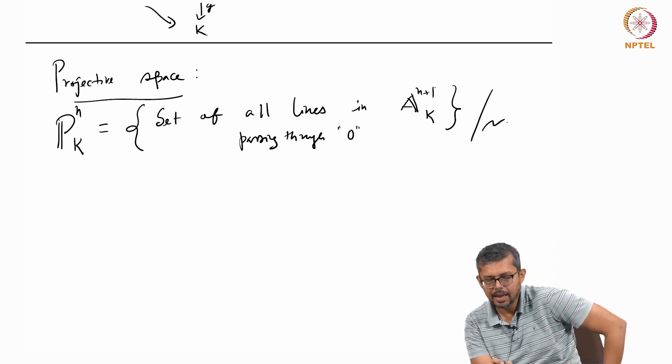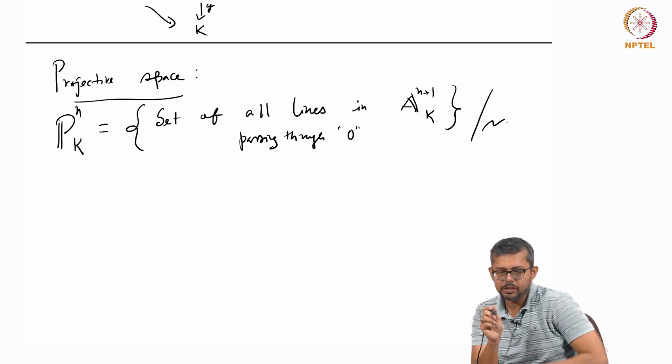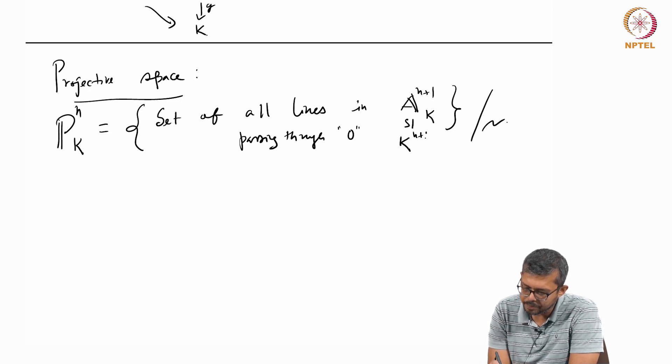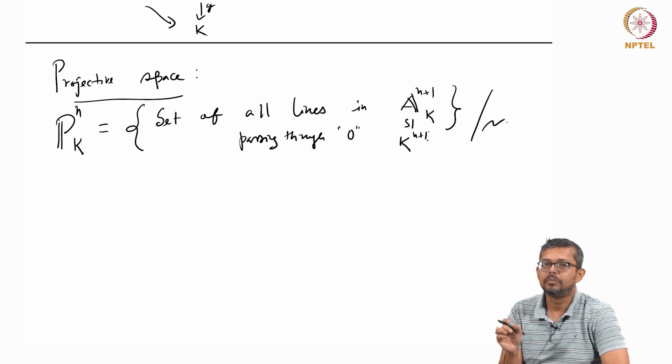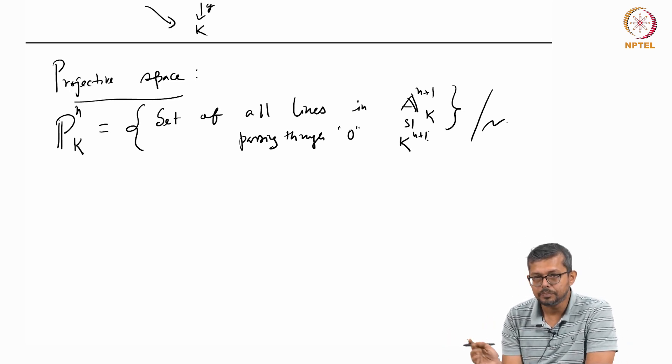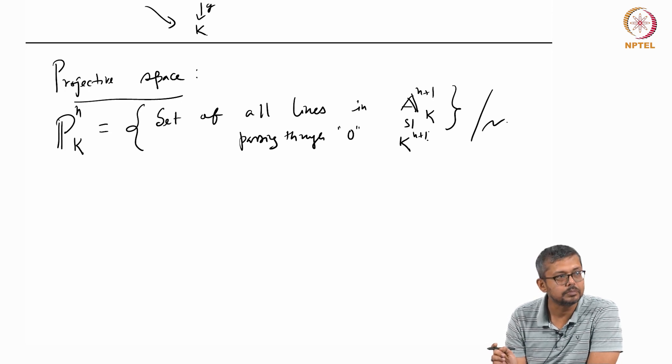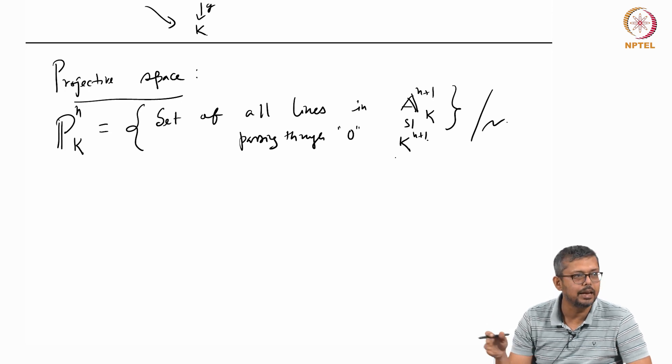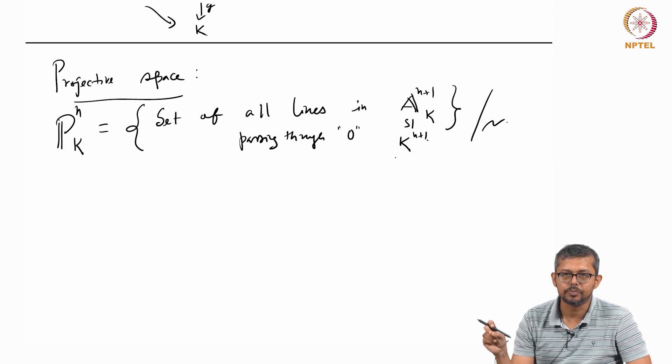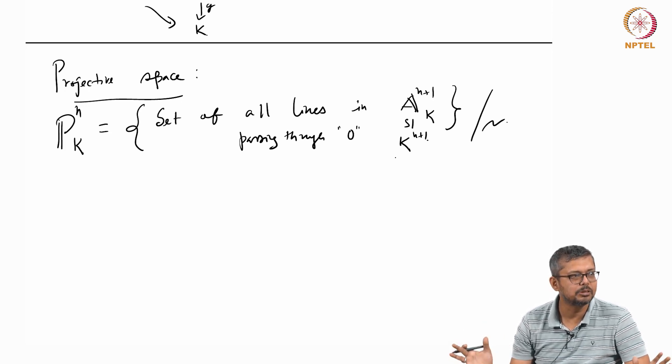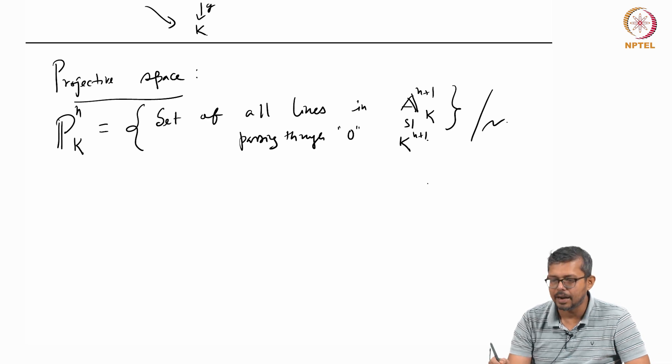When I say A^{n+1}_K there is no origin, but I am identifying with K^{n+1}. Lines passing through origin. When I write K^{n+1} means there is a 0, but A^{n+1}_K does not have 0, it is an affine space. You can identify with K^{n+1}.